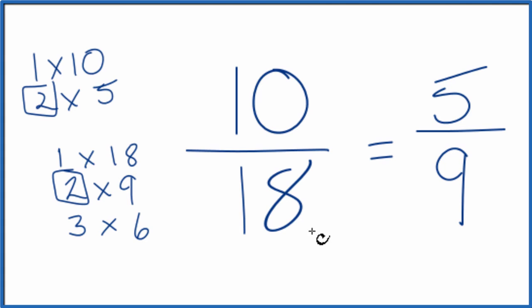So we've simplified 10 18ths down to 5 9ths, and we can't simplify this any further. These are equivalent fractions. If you divide 10 by 18 or 5 by 9, you'll get the same decimal answer. It's just that we've simplified or reduced 10 18ths down to 5 9ths.